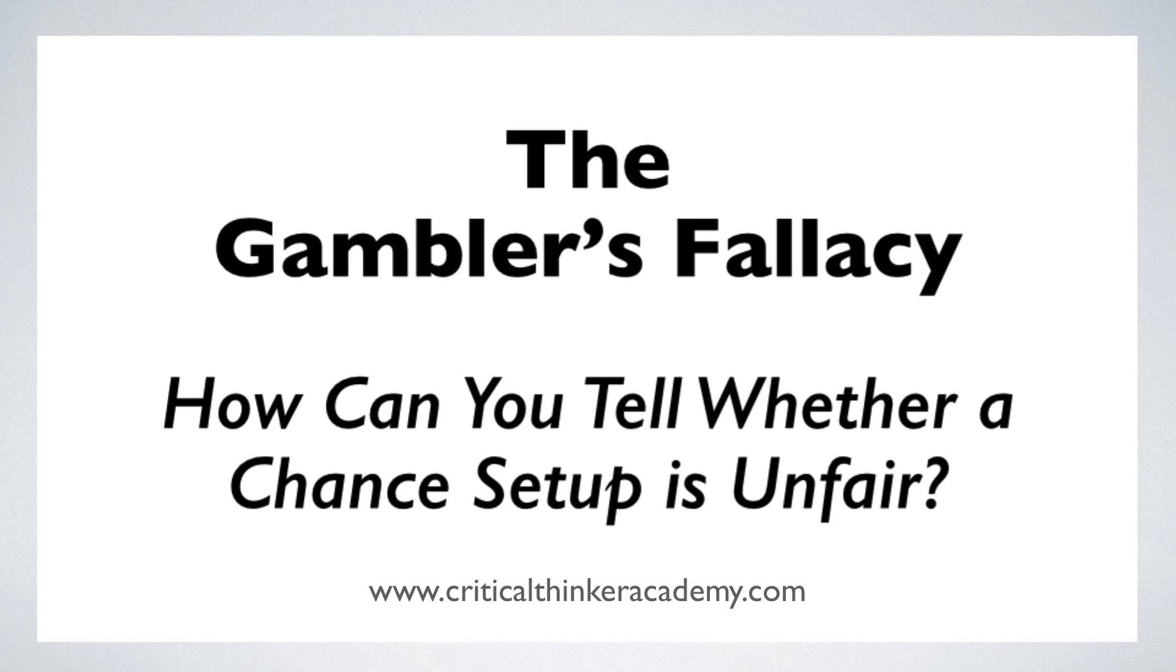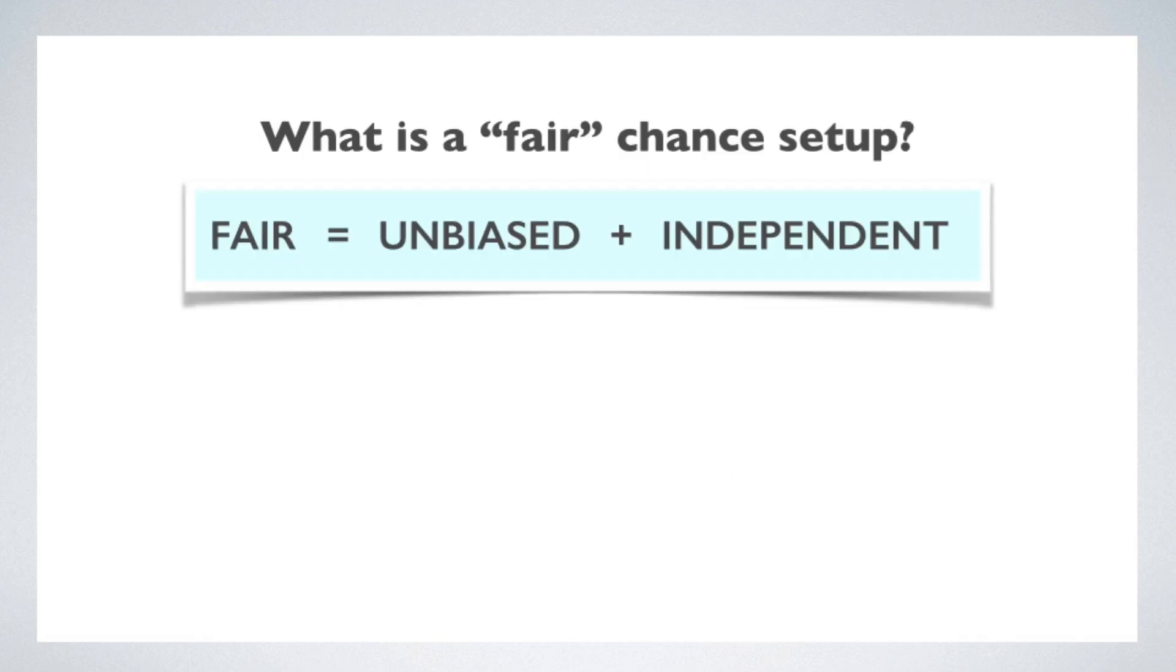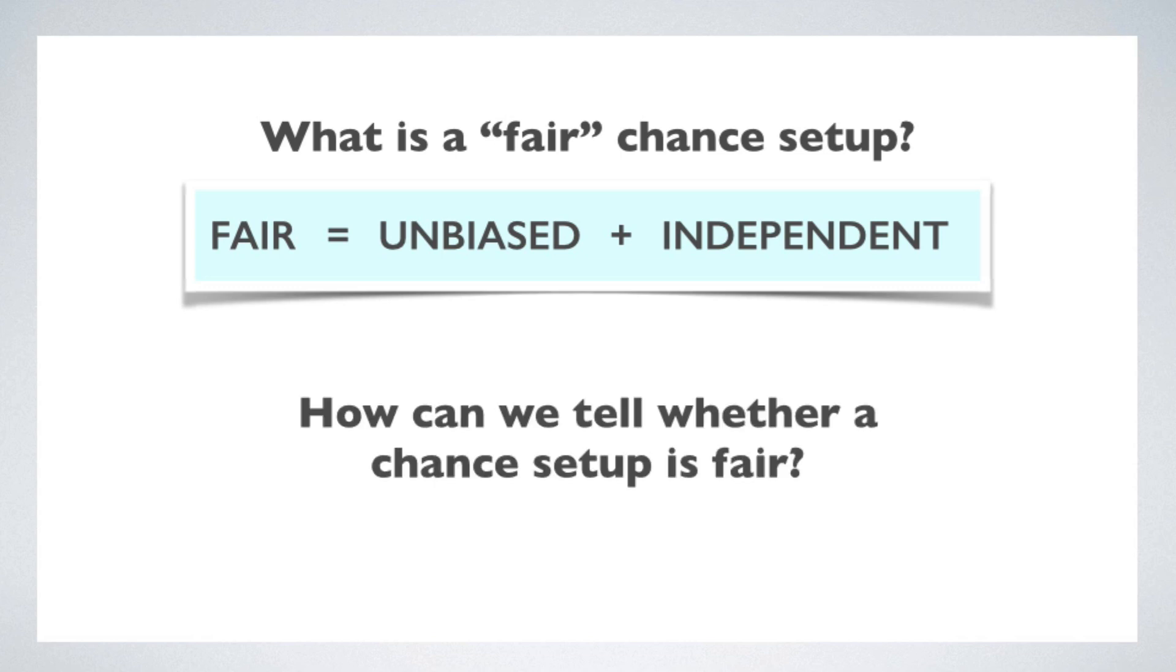We've been talking about fair chance setups, and we defined a fair chance setup as one where the outcomes are unbiased and independent. To say they're unbiased is to say the long-run behavior doesn't favor any particular outcome. To say they're independent is to say the probability of any particular outcome is unaffected by the history of previous outcomes. At this point, someone always asks me how we can tell whether a chance setup really is fair or not. This is a good question.